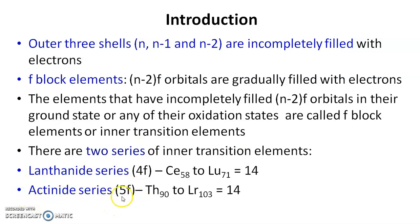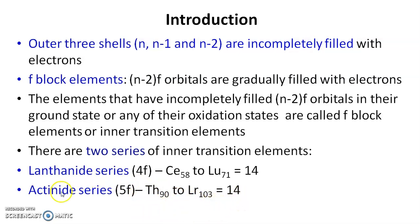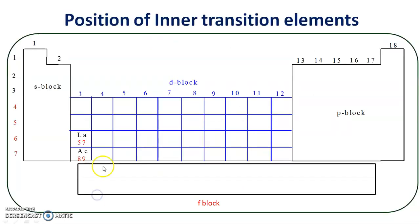Actinides are also called 5f elements. Actinides are thorium to lawrencium — thorium with atomic number 90 and lawrencium with atomic number 103. Actinides are also 14 elements. So these are the two series of inner transition elements.